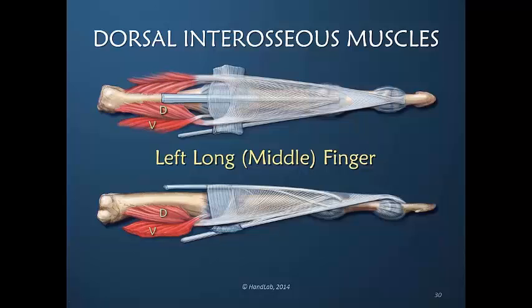So the volar belly has a very proximal insertion. The dorsal belly traverses underneath the volar belly tendon and becomes part of the dorsal apparatus, inserting into fibers that are both transverse and oblique. Therefore, the dorsal belly of the dorsal interosseous muscle affects motion throughout the entire length of the finger.